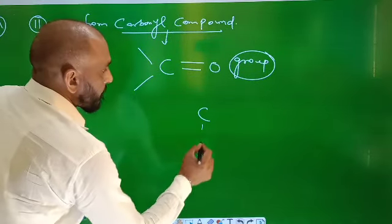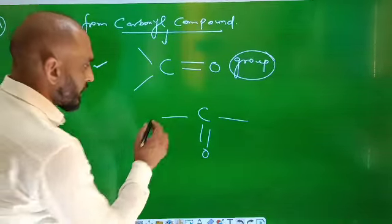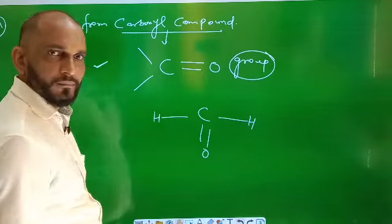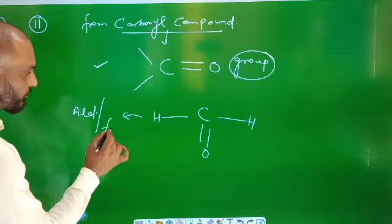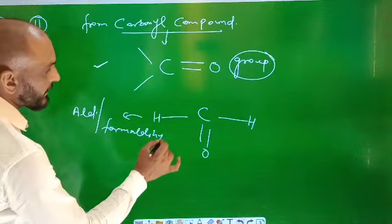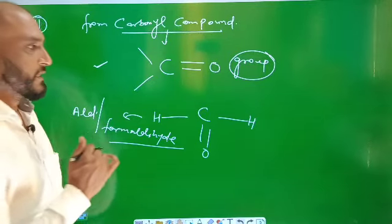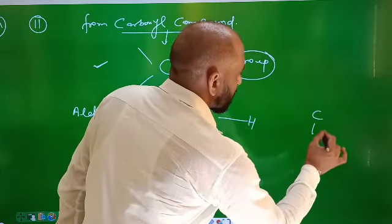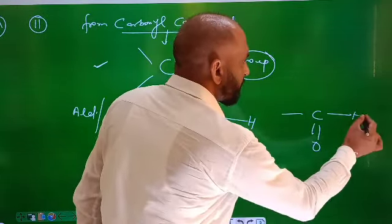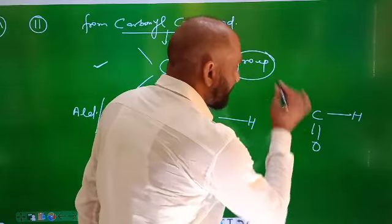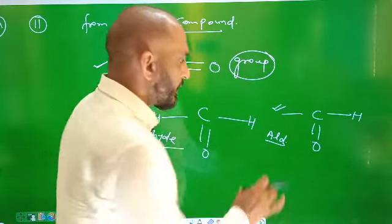Now, if both free valences of the carbonyl carbon are completed by two hydrogen atoms, then it is called an aldehyde. The name of this aldehyde is formaldehyde. If one valence of the carbonyl carbon is completed with a hydrogen atom and one valence is free, then it is called an aldehyde functional group.